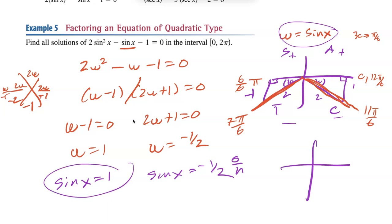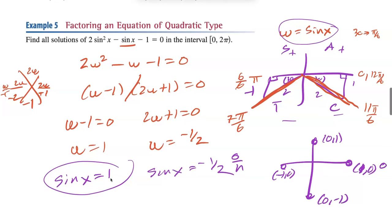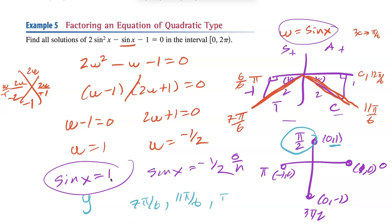For sine x = 1: anytime sine or cosine equals 1 or 0, it's a unit circle problem at the quadrantal angles. The unit circle coordinates are (1,0), (0,1), (−1,0), (0,−1) at 0, π/2, π, 3π/2. Sine is the y-value, so where does y = 1? At π/2. So our final answers are 7π/6, 11π/6, and π/2.